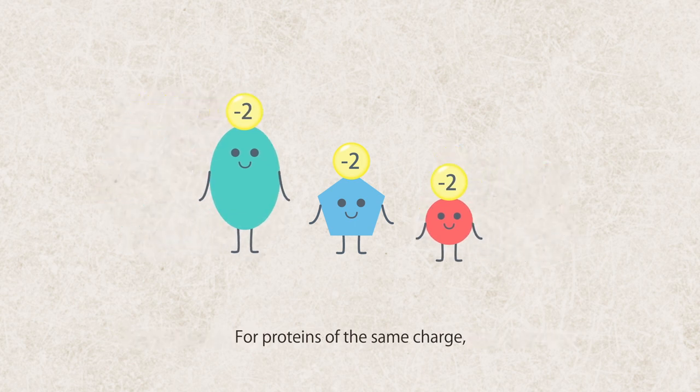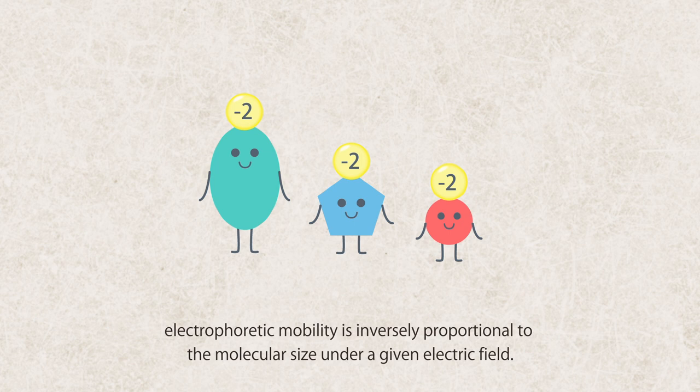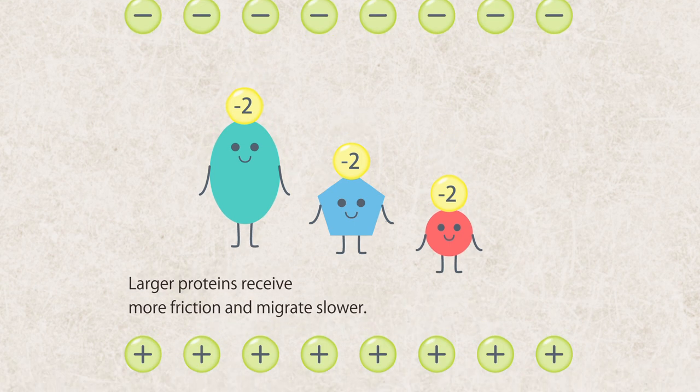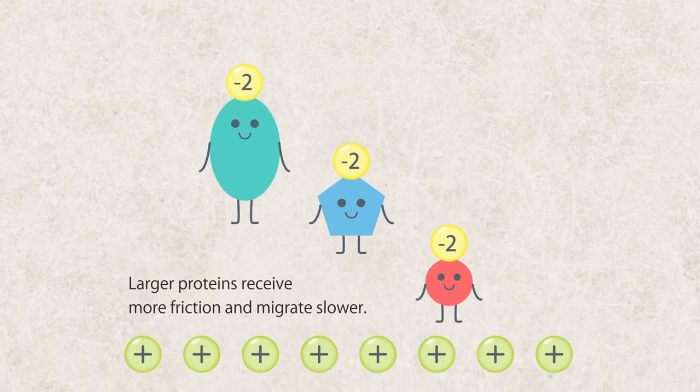For proteins of the same charge, electrophoretic mobility is inversely proportional to the molecular size under a given electric field. Larger proteins receive more friction and migrate slower.